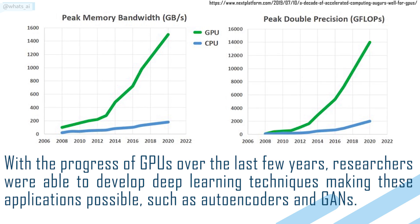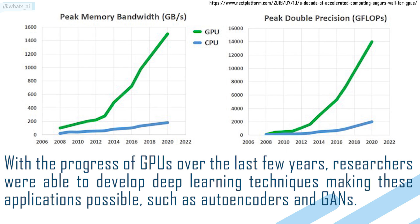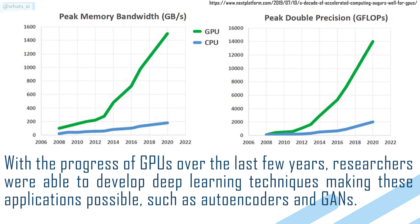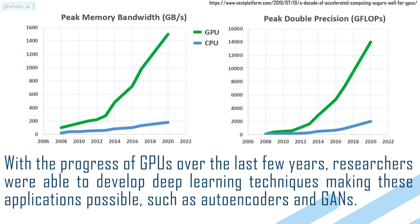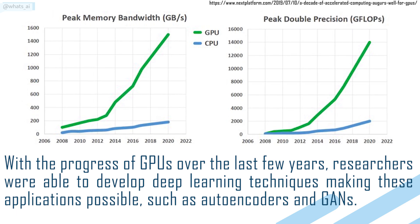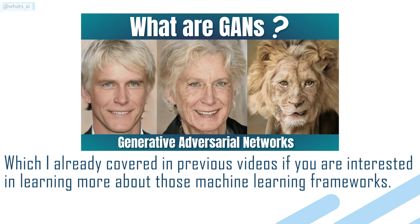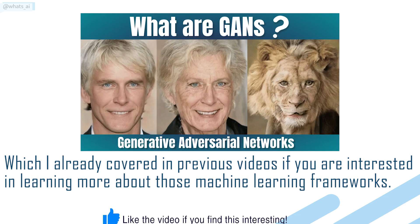With the progress of GPUs over the last few years, researchers were able to develop deep learning techniques making these applications possible, such as autoencoders and GANs, which I already covered in previous videos if you are interested in learning more about those machine learning frameworks.